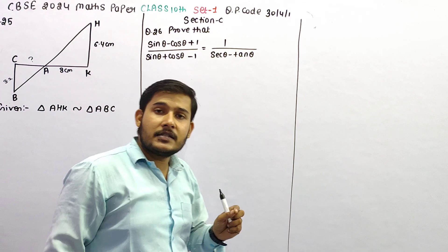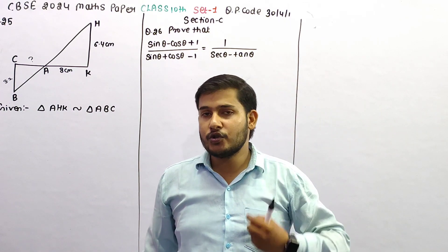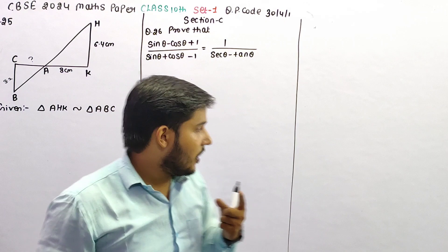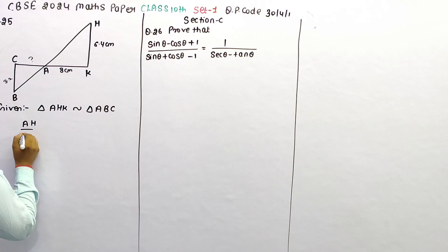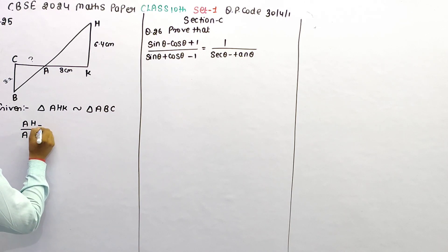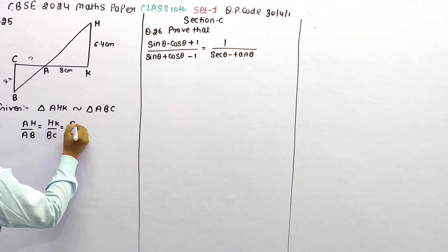If two triangles are similar, then we can write their corresponding sides in proportion. So here I can write: AH upon AB, HK upon BC, AK upon AC.